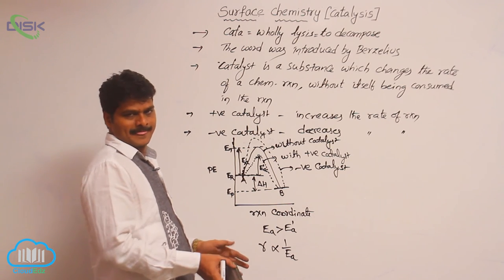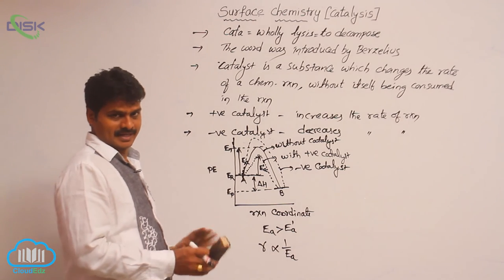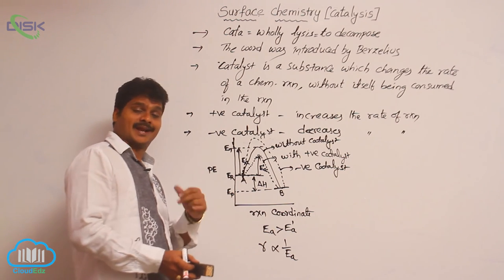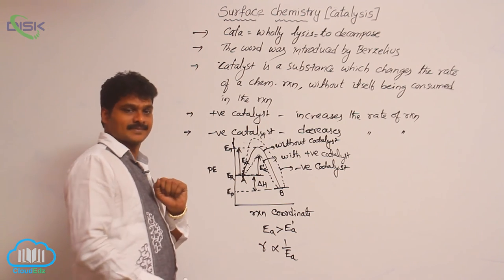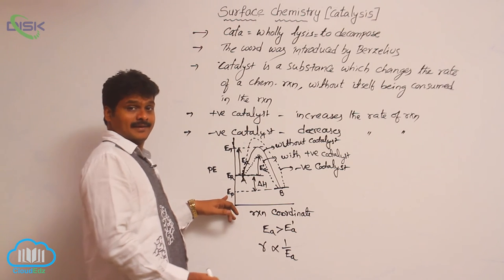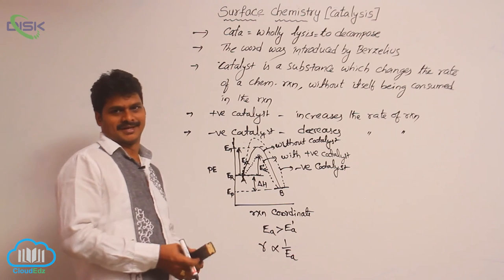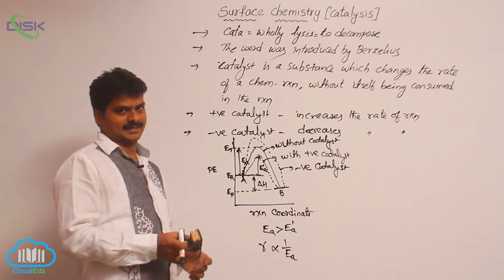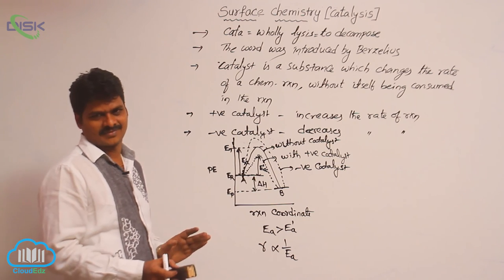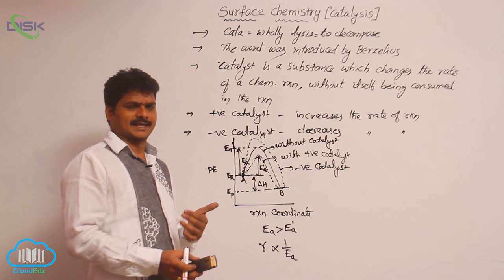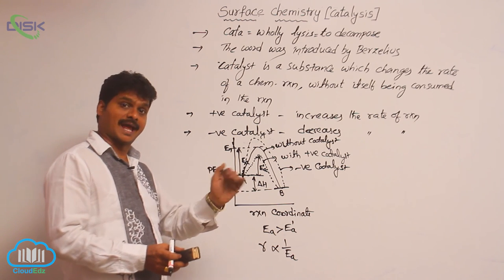By the addition of either a positive or negative catalyst, there is no change in the energy of reactants, no change in the energy of products, and no change in the enthalpy of reaction delta H. An important objective question: which of the following changes by the addition of a catalyst — energy of reactants, energy of products, enthalpy of reaction, or activation energy?